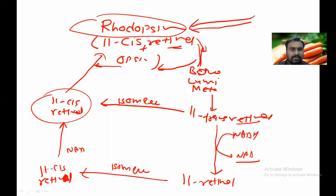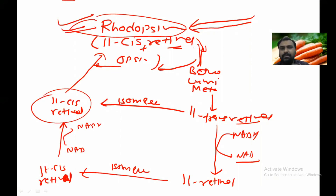Here NAD is converted to NADH and rhodopsin is resynthesized. This completes Wald's visual cycle.